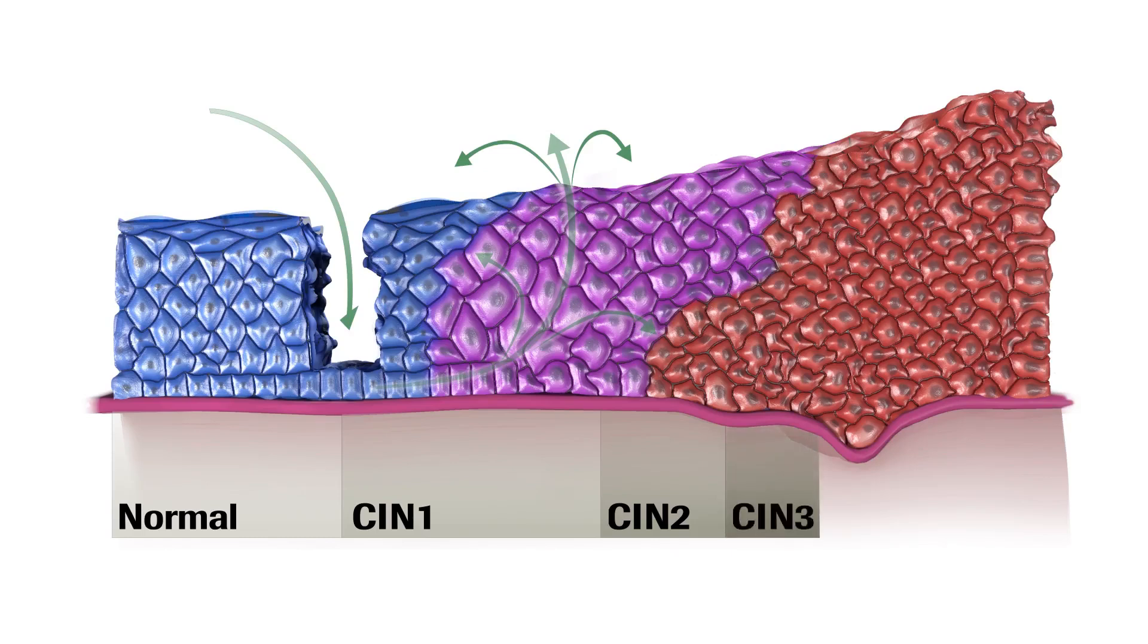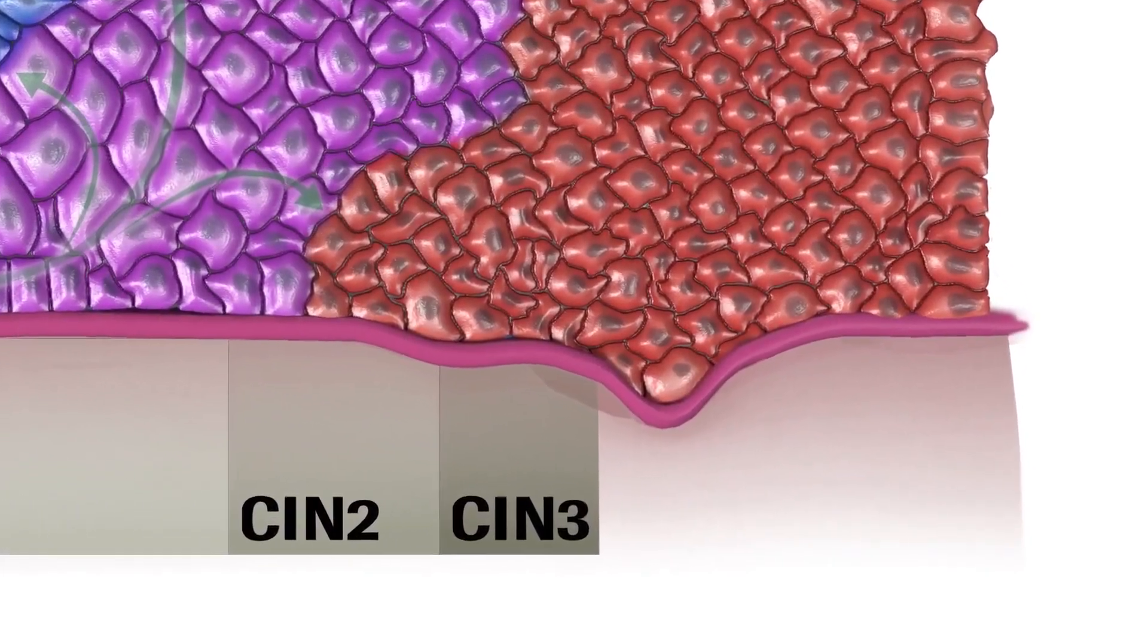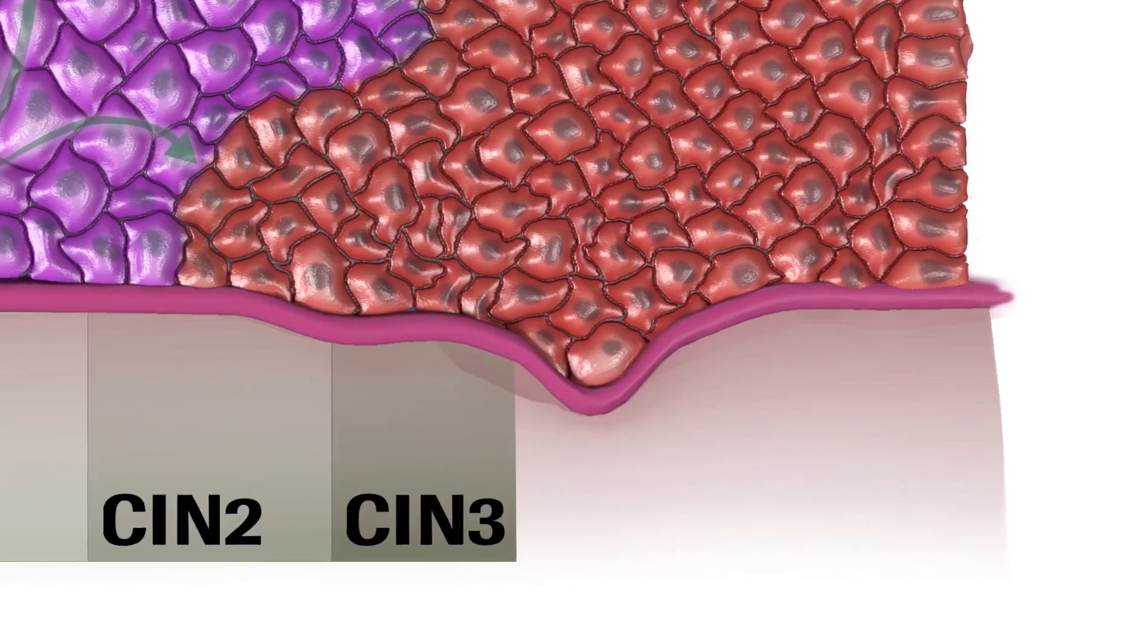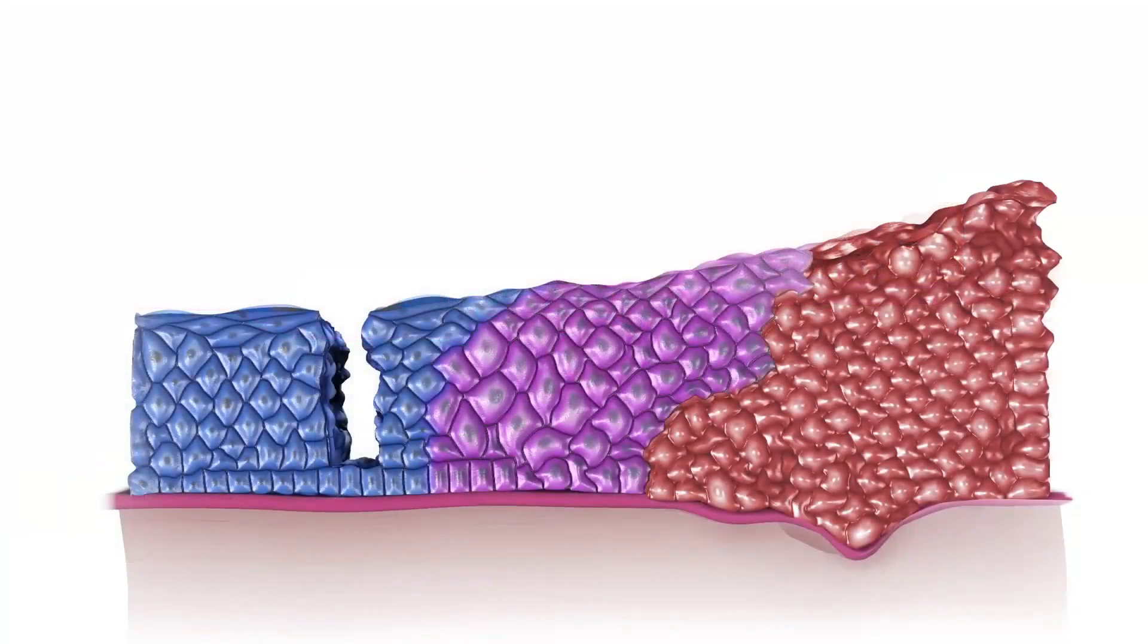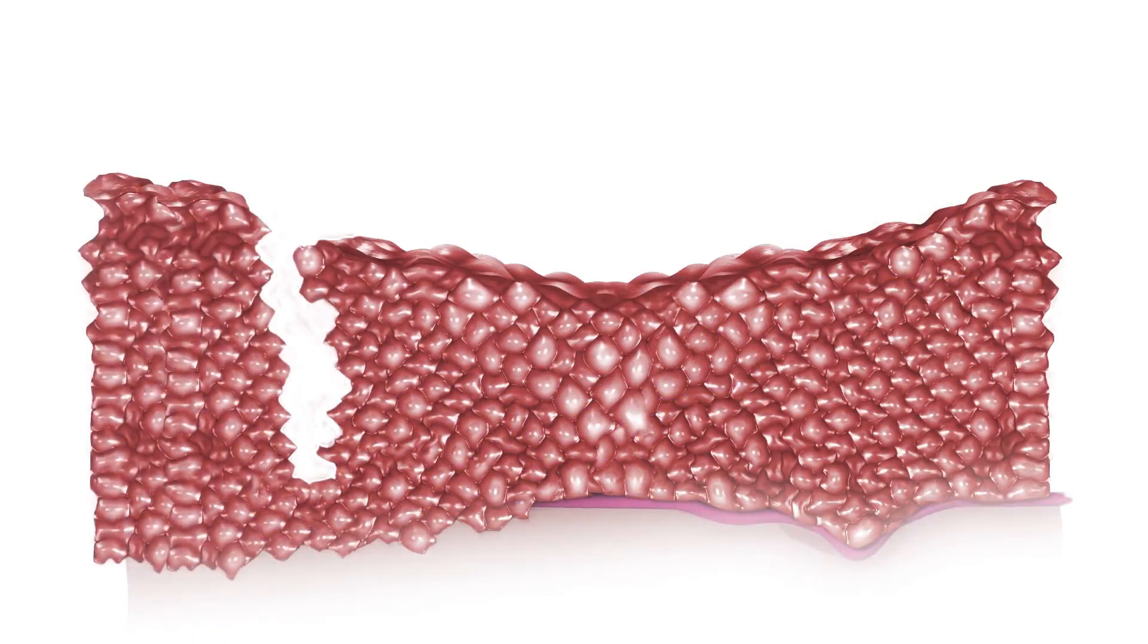This is the immediate precursor to cervical cancer. Invasive cervical cancer ensues when the abnormal cells break through the basal membrane and infect the dermis. It is when this process becomes persistent that cervical cancer becomes the ultimate consequence.